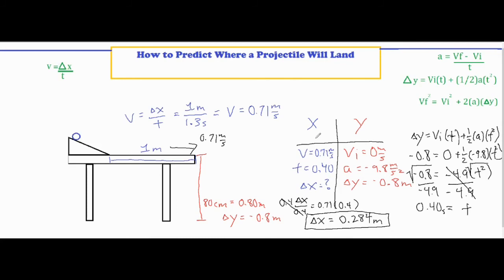And in the x direction, remember I can only use the formula velocity equals delta x over t. The reason being is because when something's in free fall there are no horizontal forces acting on it. Therefore it's going to move in constant velocity in the horizontal direction.